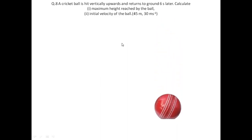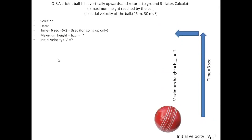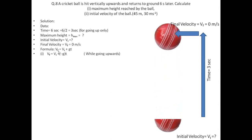Question 8: a cricket ball is hit vertically upwards and returns to ground 6 seconds later. Calculate the maximum height reached and the initial velocity. Expected answers: 45 meters and 30 m/s. Total time is 6 seconds, so time going up is 3 seconds. At maximum height, Vf = 0.